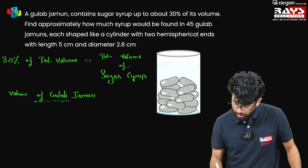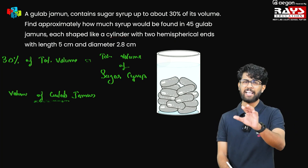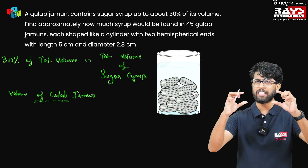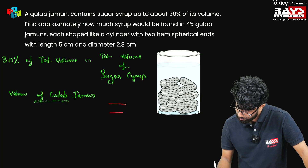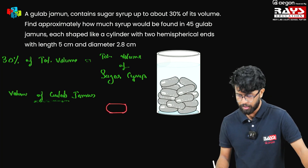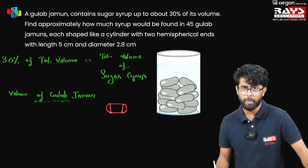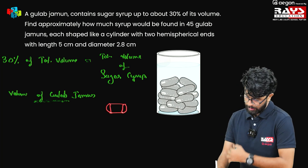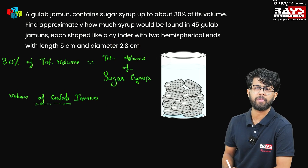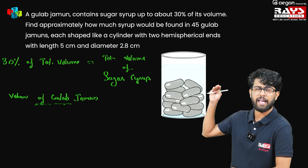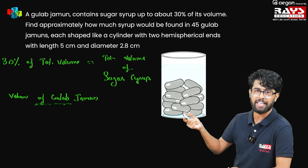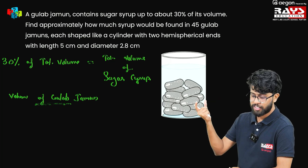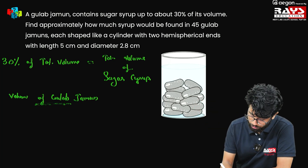First we need to understand the shape of the Gulab Jamun — it is already given in the question. The Gulab Jamun is shaped like a cylinder with two hemispherical ends, just like the problem we did before: a cylinder in the middle and two hemispheres at both ends. The diameter is given as 2.8 cm. We don't need diameter — since diameter is common for both hemisphere and cylinder, we divide by 2 to get radius. Radius is 2.8 divided by 2, that is 1.4 cm.